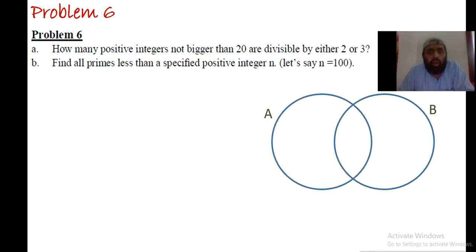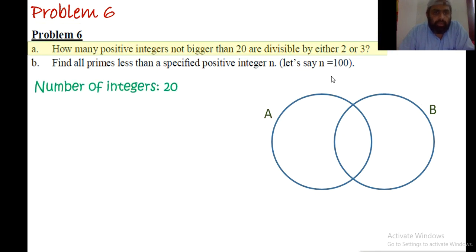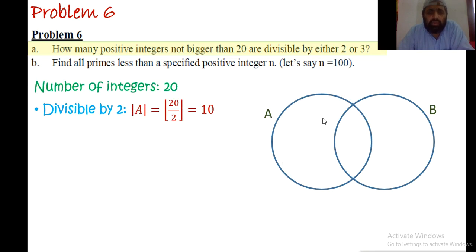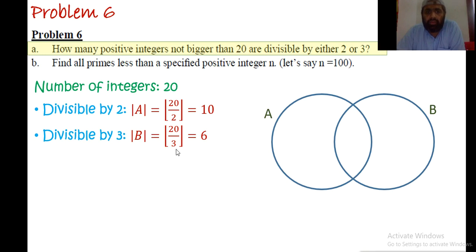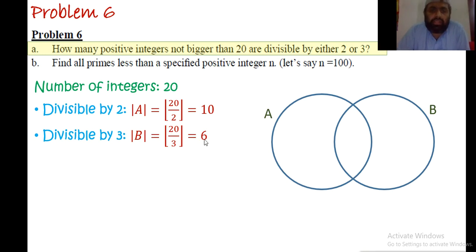Problem number 6: how many positive integers not bigger than 20 are divisible by either 2 or 3? Let set A be integers divisible by 2 — that's 2, 4, 6, 8, 10, up to 20, so |A| = floor(20/2) = 10. Set B is integers divisible by 3 — floor(20/3) = floor(6.66) = 6. The integers in B are 3, 6, 9, 12, 15, 18.